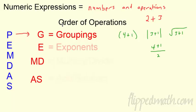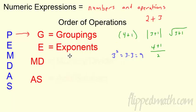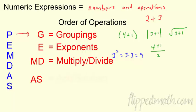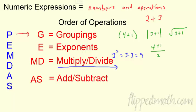Next are exponents. Things like 3 squared means 3 times 3, which is 9. Exponents come second in our order of operations. Then instead of stacking MD, multiply and divide are the same level — it just depends on who comes first. We work left to right. Same thing with add and subtract: it's whoever shows up first, left to right.